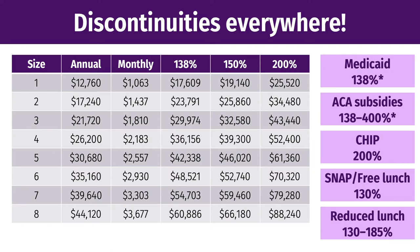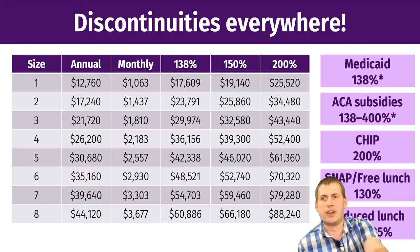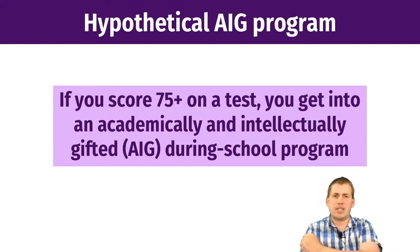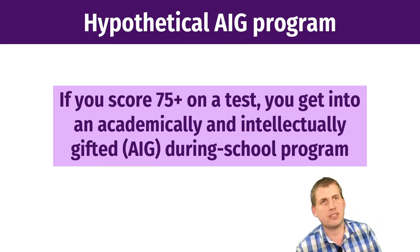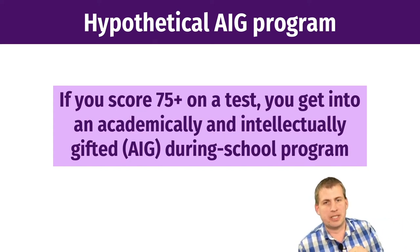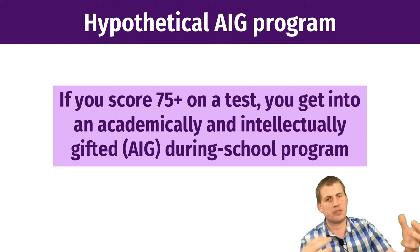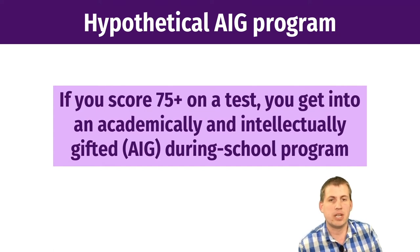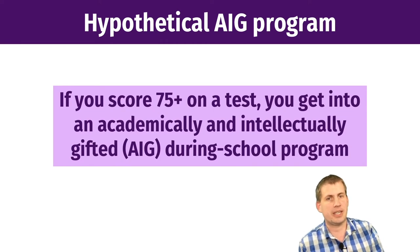For our running example throughout this lecture, we'll use a hypothetical Academically and Intellectually Gifted (AIG) during-school program with simulated data. If you score above 75 on a test in sixth grade, you're accepted into the AIG program for extra during-school activities. We'll then look at a final test at the end of high school to see if the AIG program boosted outcomes for people who had a high enough score to get in.